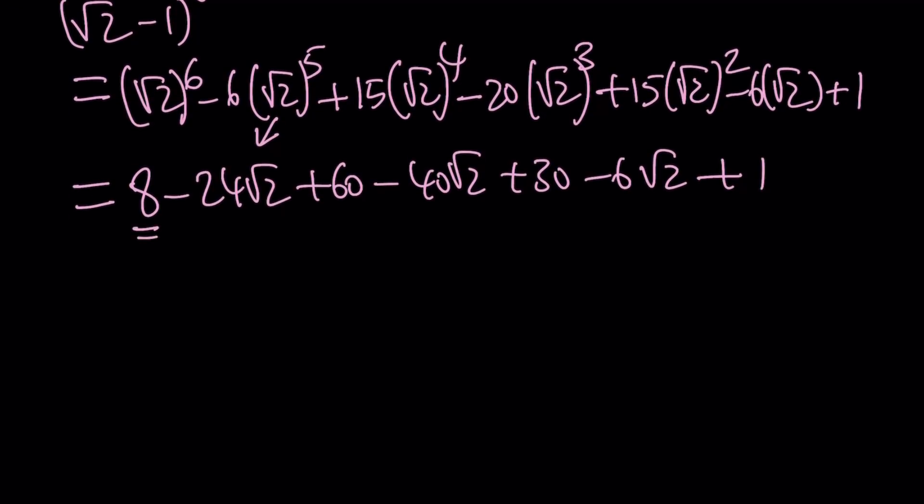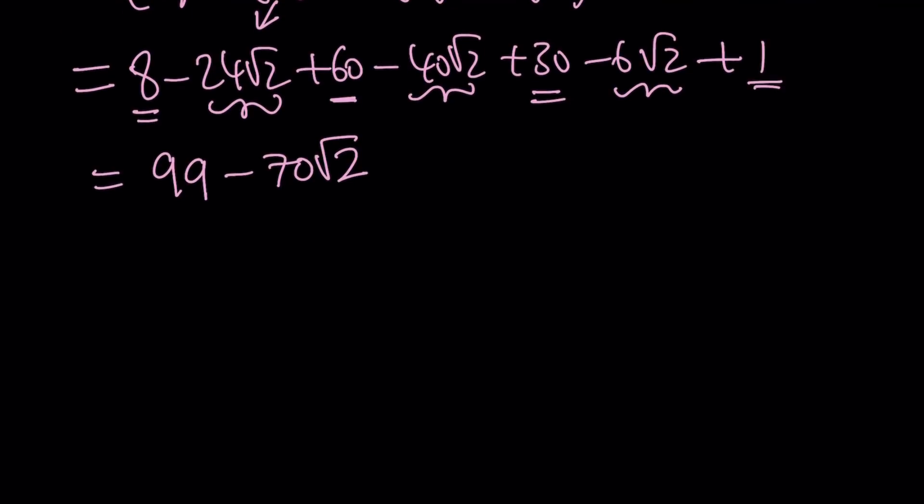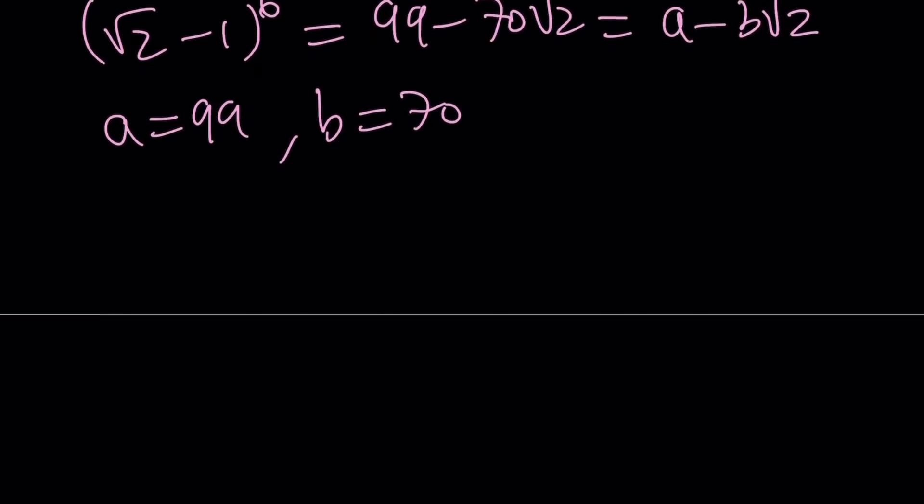Let's go ahead and add like terms. 8 plus 60 plus 30 is 98 plus 1 is going to make 99. And then we have negative 24, negative 40, and negative 6, that's negative 70 multiplied by square root of 2. So, we got square root of 2 minus 1 to the 6th power equals 99 minus 70 root 2. But our expression said something like A minus B root 2, where A and B are integers. Obviously, integers are rationals. Therefore, we can safely say that A must be 99 and B must be 70. Otherwise, you're going to get a contradiction. If A and B are rationals and this equality is given, then what I said is true.